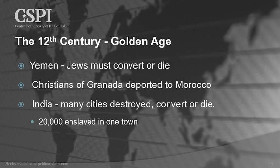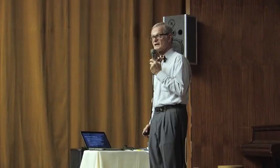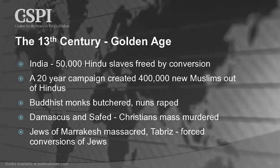In Yemen, the persecution of Jews continues — they're given the order: convert or die. The Christians of Granada are deported to Morocco. In India, many cities are destroyed under the same order: convert or die. 20,000 Hindu slaves were taken in one town. Then 50,000 Hindu slaves are freed by conversion, because Islam has a doctrine of slavery — about the only way a slave can gain freedom is to convert to Islam. A 20-year campaign created 400,000 new Muslims out of Hindus.